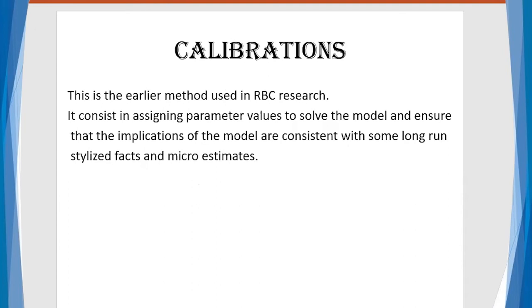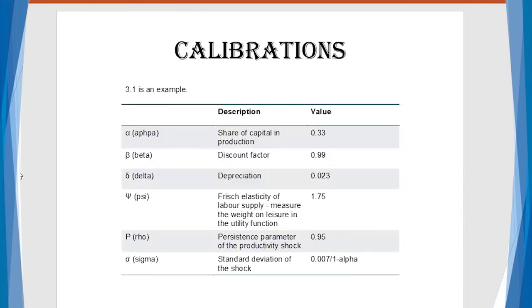Now the thing that was common to RBC at that time, when it was very popular, is that all the parameters were assigned values. That is what we call calibration. We now look for data, either from the literature or from other works, from similar economies. So that we can ensure a consistent, that is a value that are consistent with some long-run stylized facts and some micro estimates.